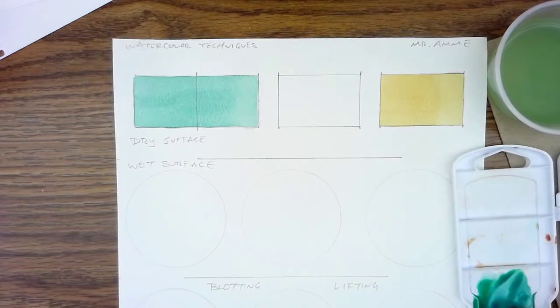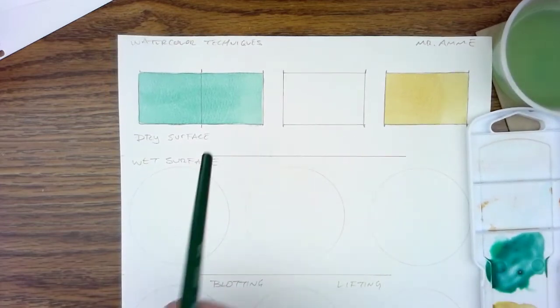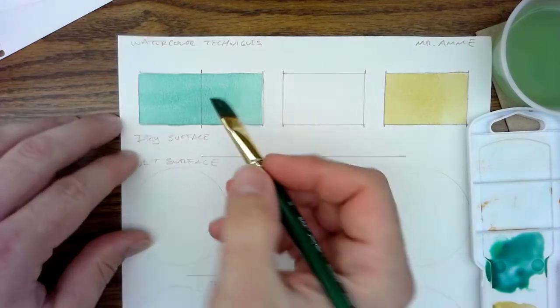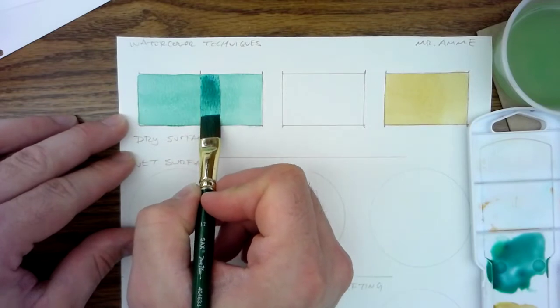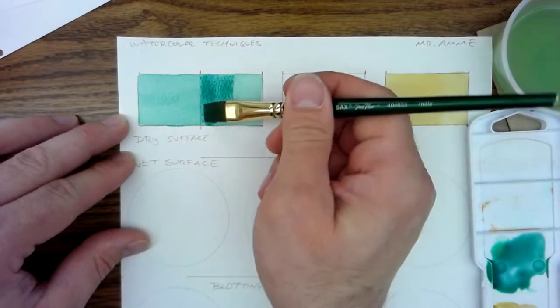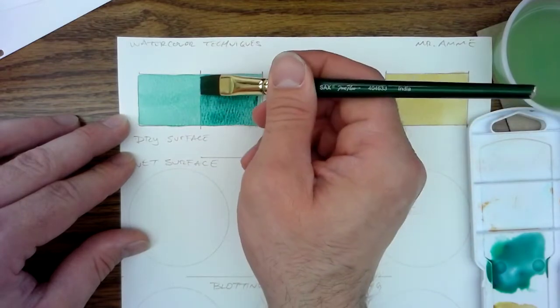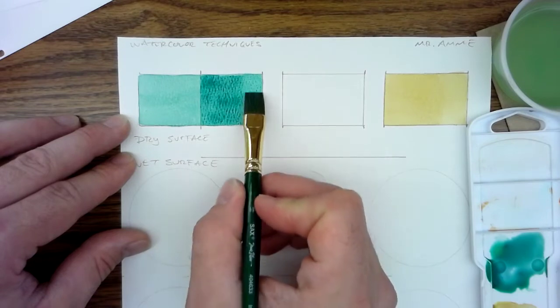You can see how much I've added a little bit more pigment in there. It's not as soft or as transparent as a wash. If I come in on this half of it, you can still see the transparent quality of it.